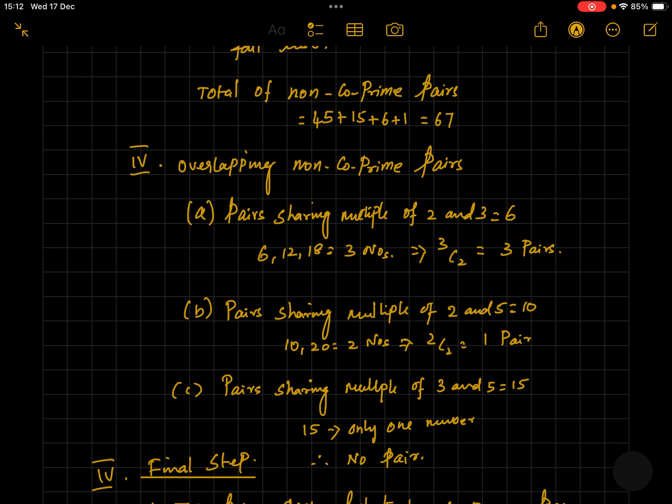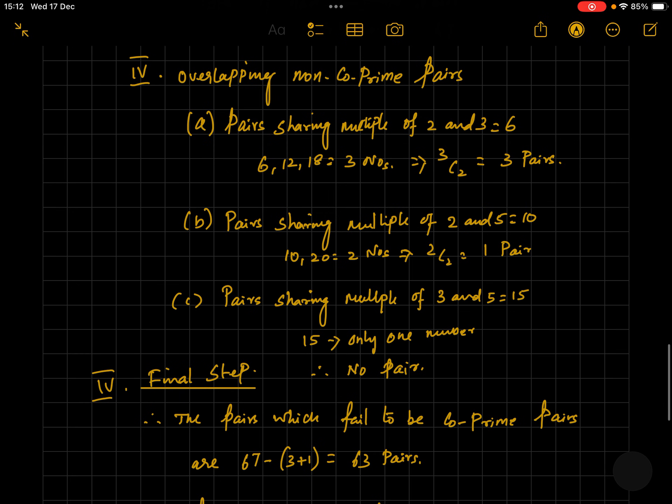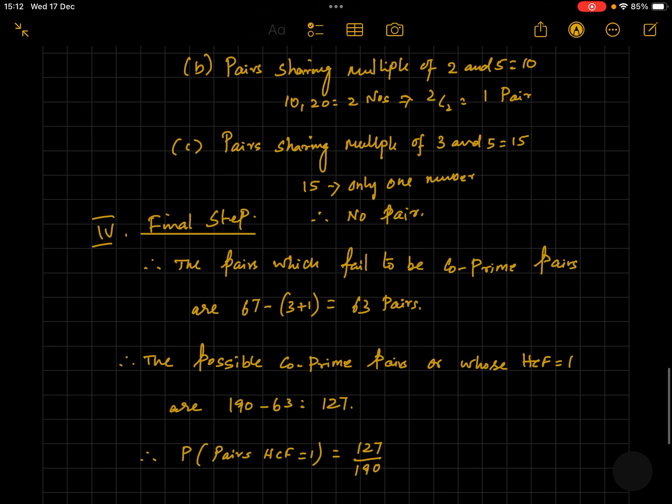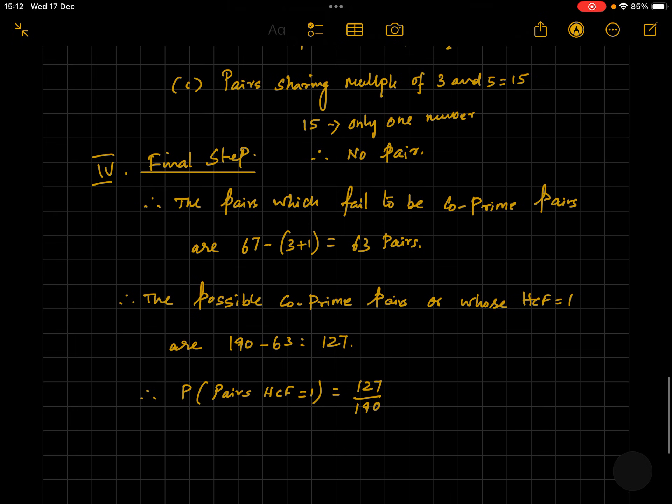Let us subtract the 4 overlapping pairs from 67 pairs. We get a total of 63 pairs that failed the co-prime test, or they are not co-prime. Therefore, the possible co-prime pairs whose HCF is 1 is 190 minus 63, which failed the test, which equals 127.